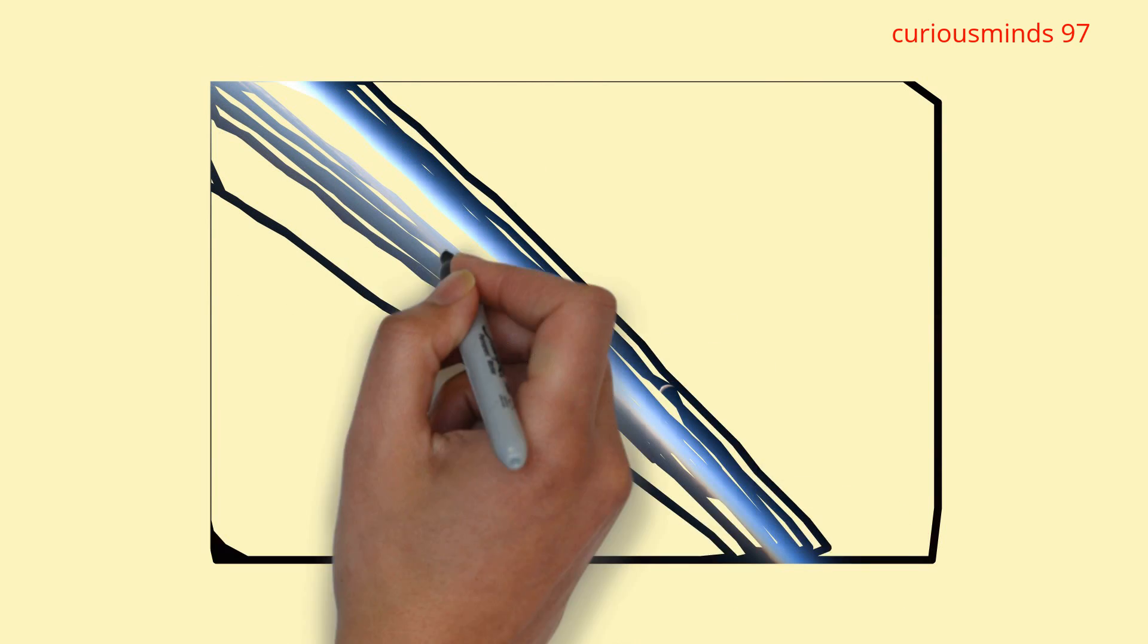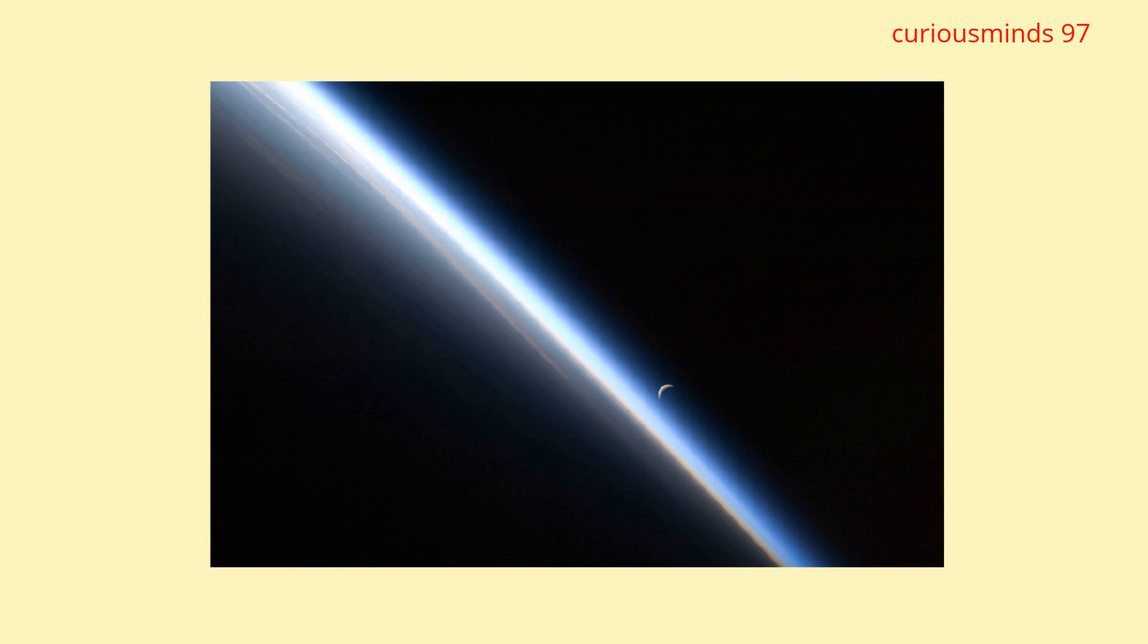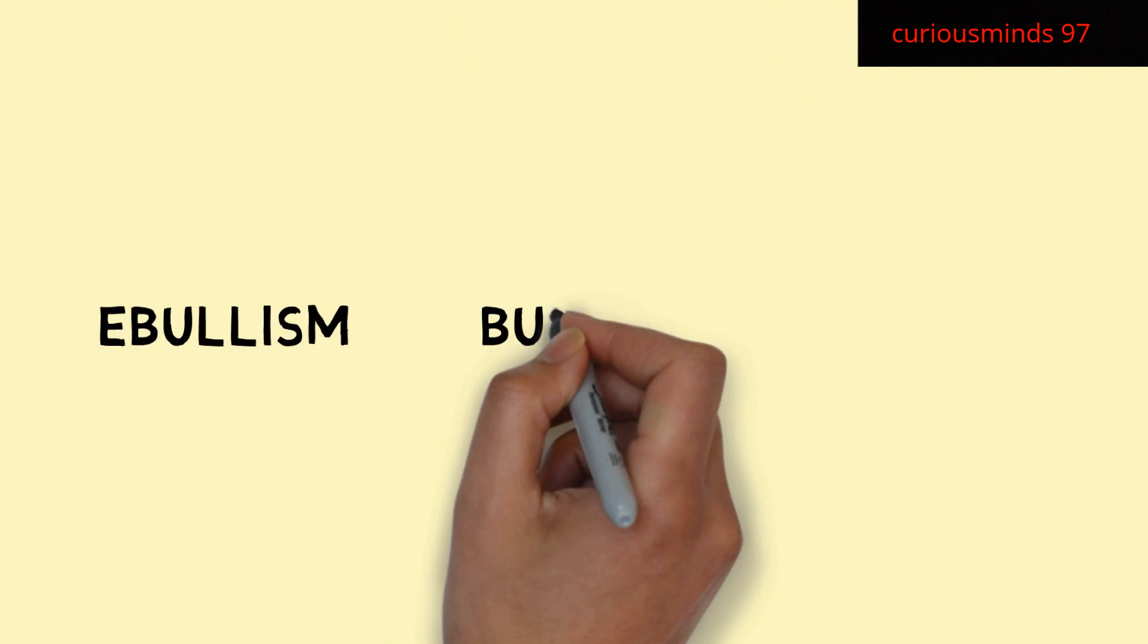You are exposed to all kinds of things when you are in the vacuum of space without the lovely thick atmospheric blanket. The most serious dangers of exposure to outer space are a lack of oxygen and ebullism.